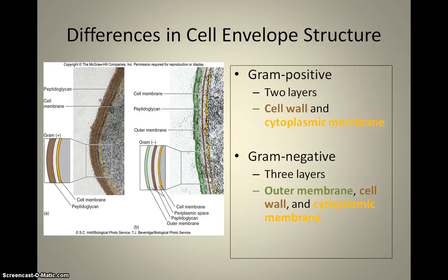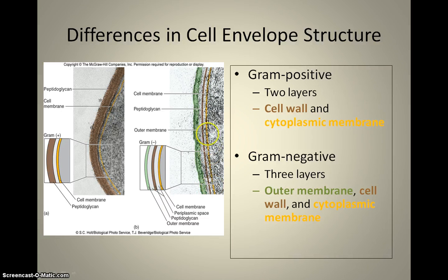A gram-negative bacteria is one that has three layers: an outer membrane, a peptidoglycan cell wall, and a cytoplasmic membrane. You can see the outer membrane is green here, and then there's a very thin peptidoglycan layer, followed by the cytoplasmic membrane. They are separated by periplasmic spaces.